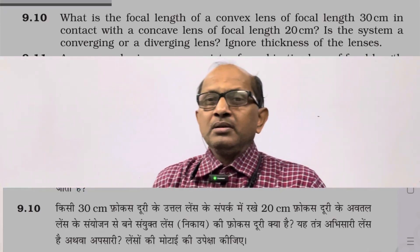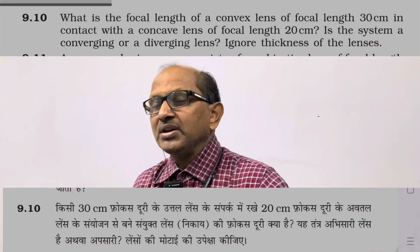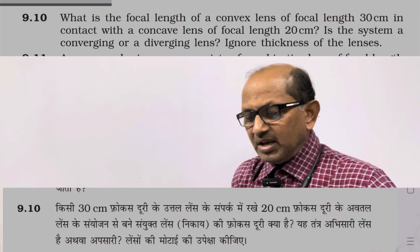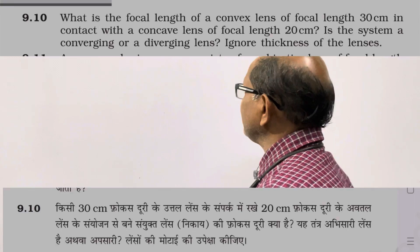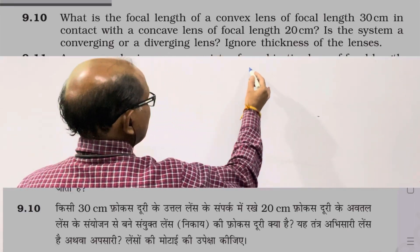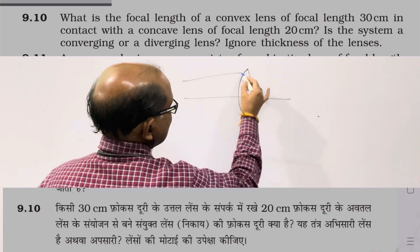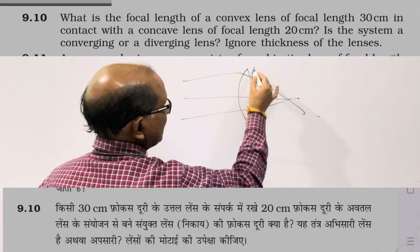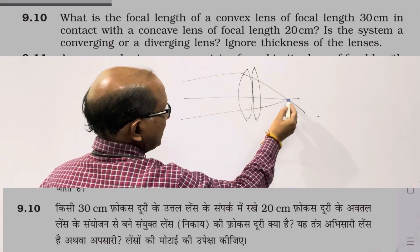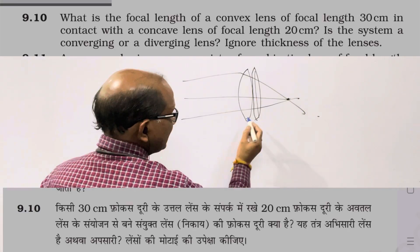The problem asks us to ignore the thickness of the lenses. When we studied lens combinations, we learned that when one lens creates an image and another lens is in contact with it, we can ignore the separation between them.